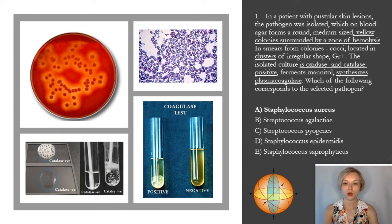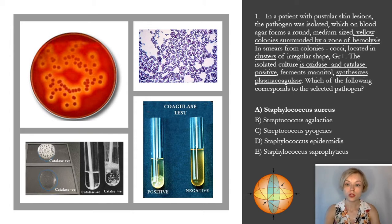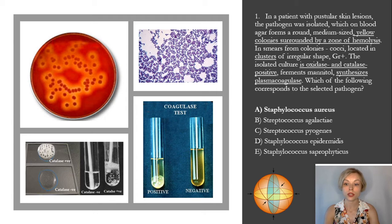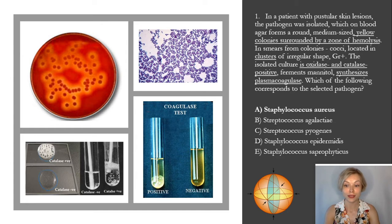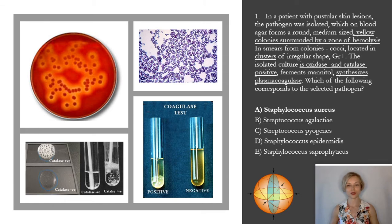Test number one. In a patient with pustular skin lesions, the pathogen was isolated which on blood agar forms medium-sized yellow colonies surrounded by a zone of hemolysis. In smears from colonies, cocci located in clusters of irregular shape, gram-positive. The isolated culture is oxidase negative and catalase positive, ferments mannitol, synthesizes plasma coagulase. Which of the following corresponds to the selected pathogen? The correct answer is A — Staphylococcus aureus.